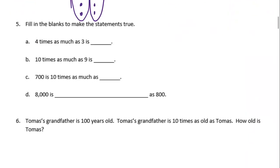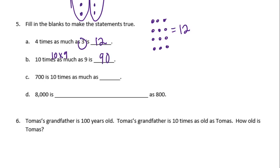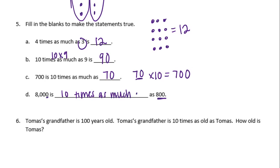Number 5. Fill in the blanks to make the statements true. 4 times as much as 3 — so 4 times as much as 3, we could draw it: 3 and then 4 groups of those, that would give me 12. 10 times as much as 9 — so 10 groups of 9, or 10 times 9, is 90. 700 is 10 times as much as — so something times 10 is equal to 700, that would be 70. And 8,000 is how many times as much as 800 — so it's one more zero, meaning we moved one more place value — so we're going to say 10 times as much.